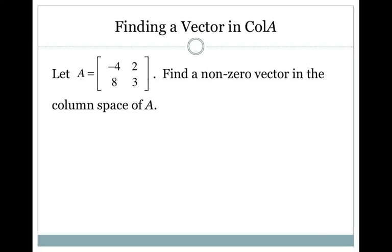If I'm asked to find a vector in the column space of A, what that means is find some linear combination of the columns of A.